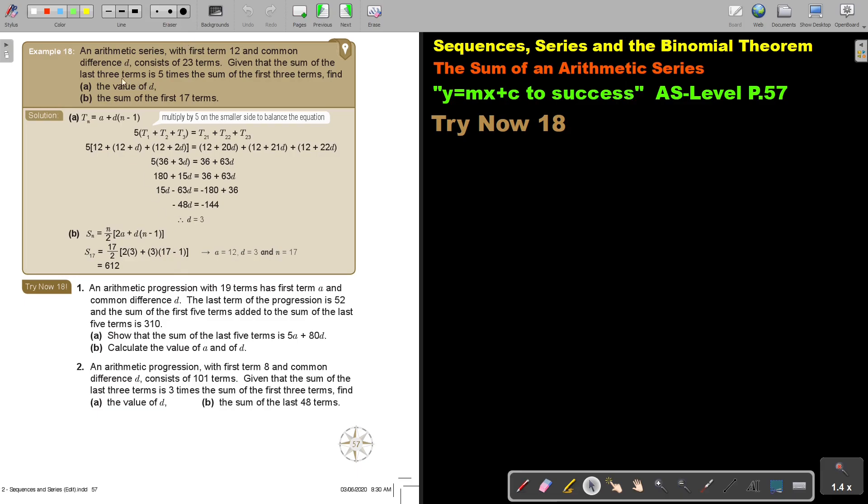Let's look at another example. An arithmetic series with first term 12 and common difference T consists of 23 terms. Given that the sum of the last three terms is 5 times the sum of the first three terms, find the value of T.